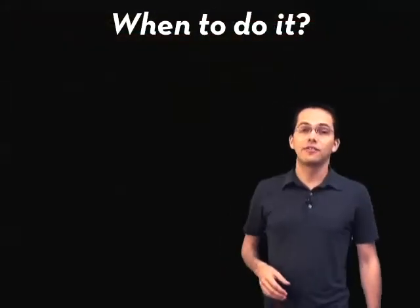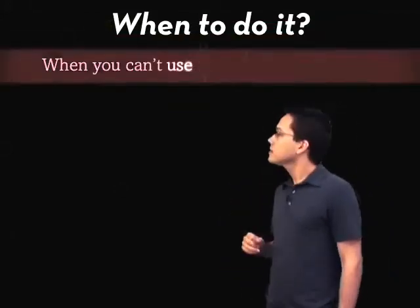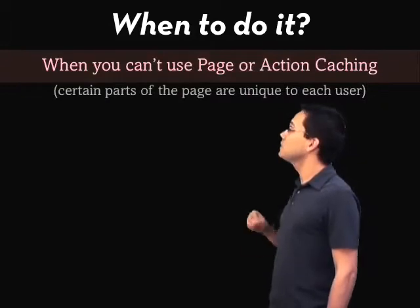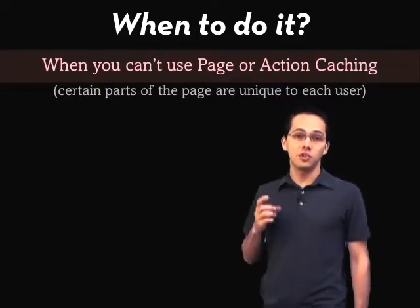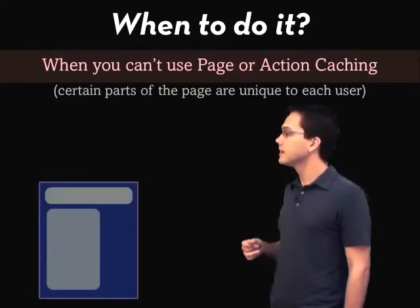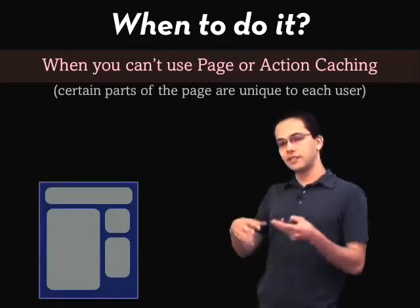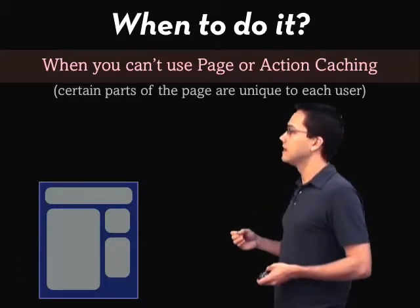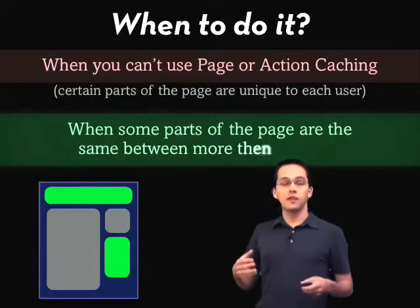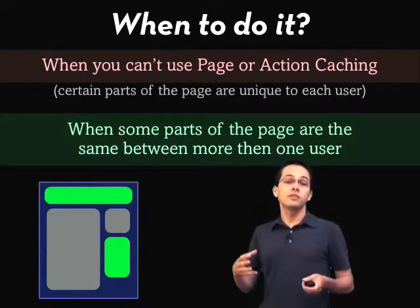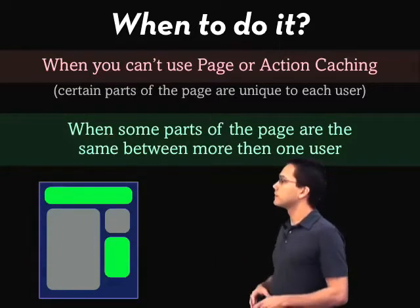So now you know how to fragment cache — but let's make sure it's clear when you want to do it. You want to fragment cache when you can't use page or action caching, probably because certain parts of the page are unique to each user. To figure out what to fragment cache, look at a page: if it has boxes, recognize which ones are the same across all users and reused across multiple pages — those are the ones you fragment cache.